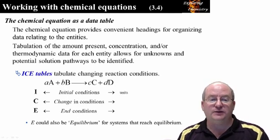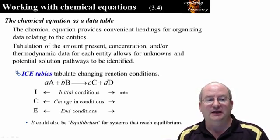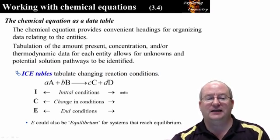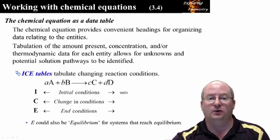Since we are interested in how the individual entities change during the reaction, and the reaction stoichiometry dictates how the entities change, it seems obvious to tabulate the data on individual entities with the chemical equation. Note that the units of the entities in the table is also reported.